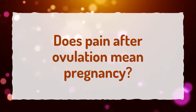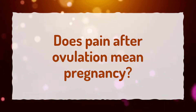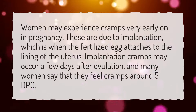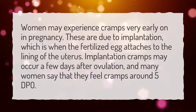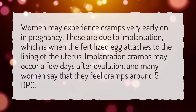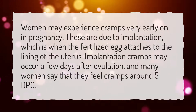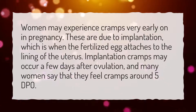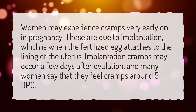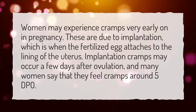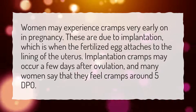Does pain after ovulation mean pregnancy? Women may experience cramps very early on in pregnancy. These are due to implantation, which is when the fertilized egg attaches to the lining of the uterus. Implantation cramps may occur a few days after ovulation, and many women say that they feel cramps around 5-DPO.